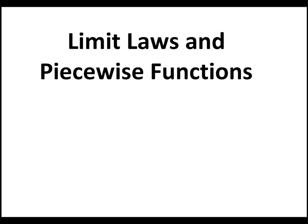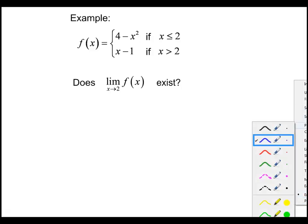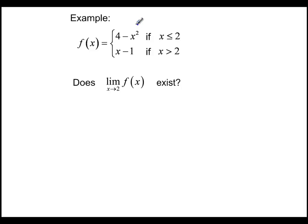Now we're going to talk about what limit laws tell us about piecewise functions. A piecewise function is a function broken into two or more parts, where you have different rules for different parts of the function. Here we're using 4 minus x squared when x is less than or equal to 2, and x minus 1 if x is greater than 2.